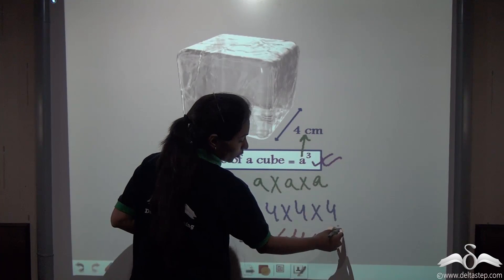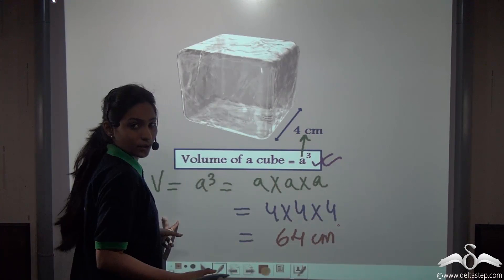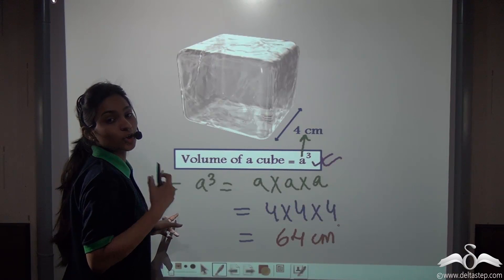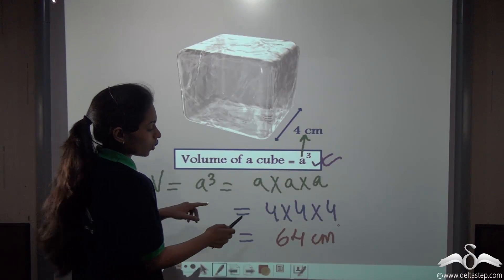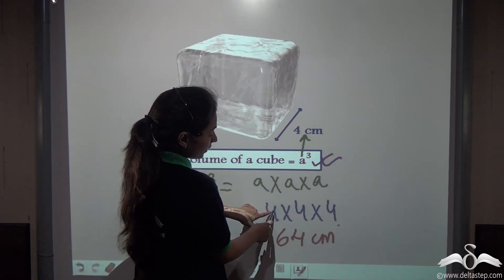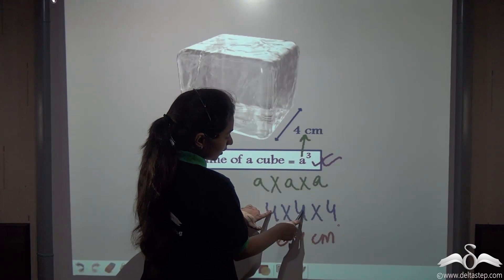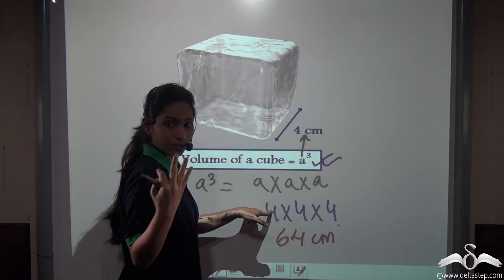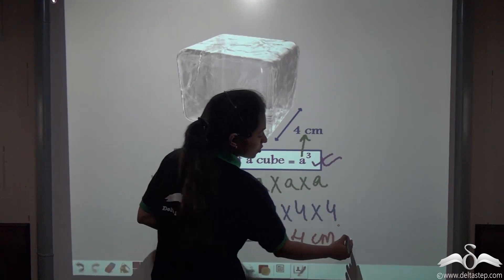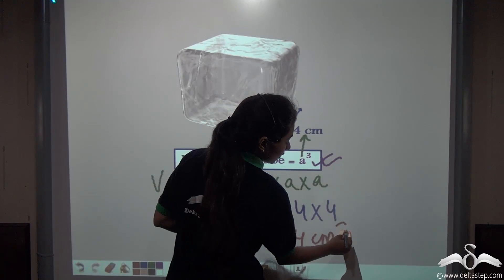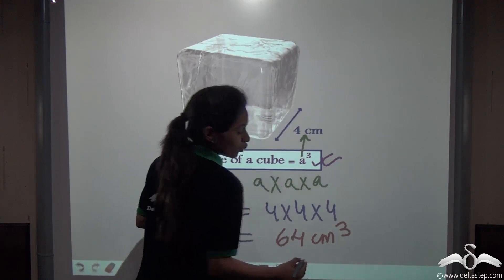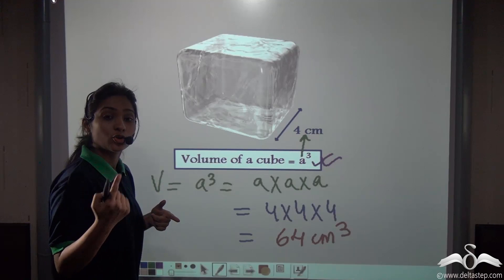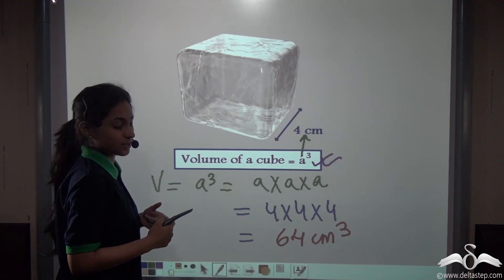What unit will I put? The cube is always represented with cubic units, because we are multiplying centimetre into centimetre into centimetre three times, so we get centimetre cubed. Remember, volume is always represented with cubic units.